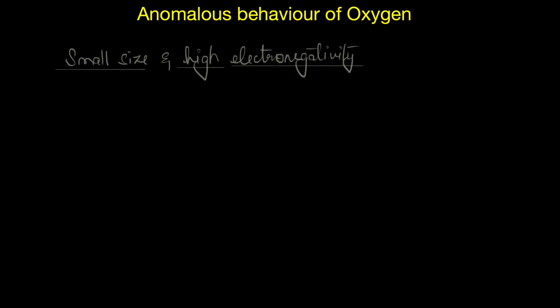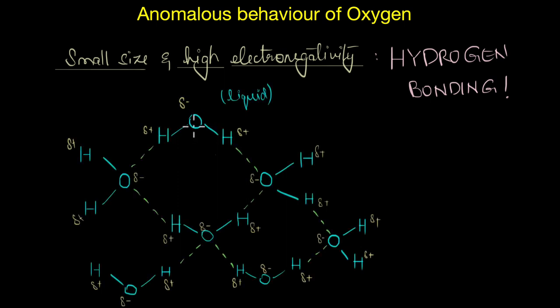Let's now discuss the consequence of small size and high electronegativity of oxygen. Because of the small size and very high electronegativity of oxygen it can actually form strong hydrogen bonds and this is what we observe in water. Because of the high electronegativity difference between hydrogen and oxygen, these atoms acquire partial charges like hydrogen acquires partial positive charge and oxygen acquires partial negative charge. And because oxygen also has the presence of two lone pair of electrons, these can further coordinate with the hydrogen of another water molecule.